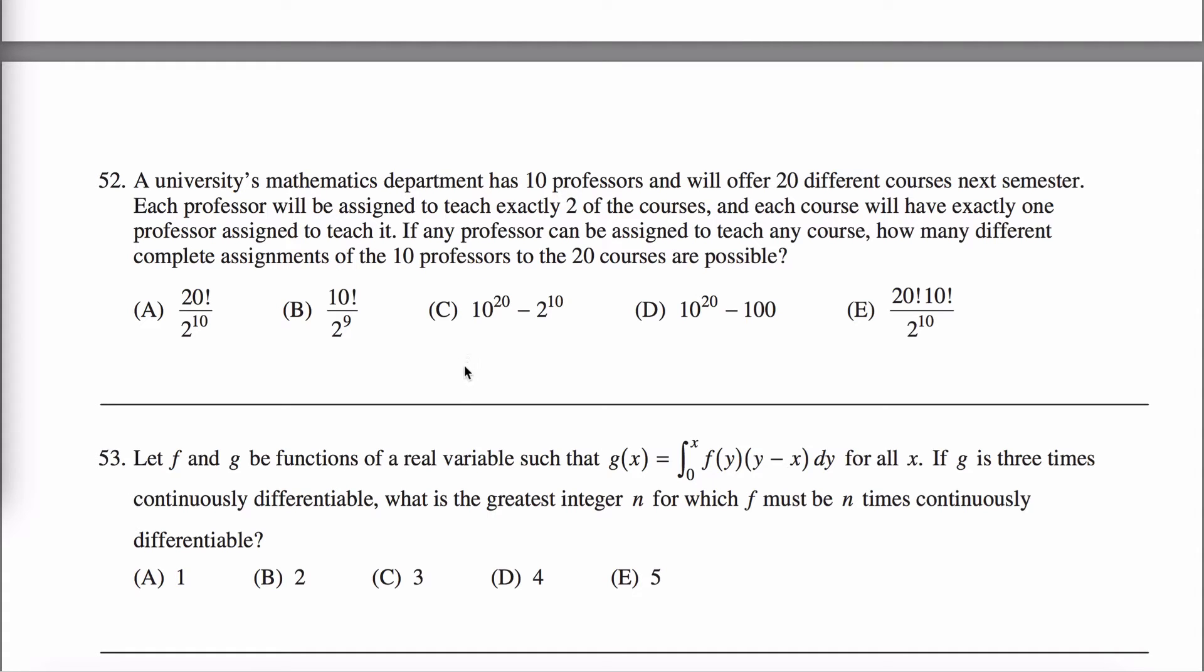I think the easiest way to think about it is assign the courses based on tenure, right? So whoever's been there the longest gets to choose first. So I'm super old. I've been teaching there forever. I get first choice of my classes, right? So how many choices do I have? Well, for the first class that I teach, I have 20 choices.